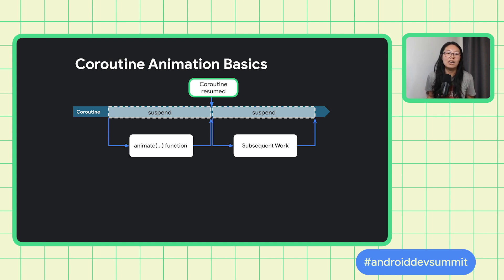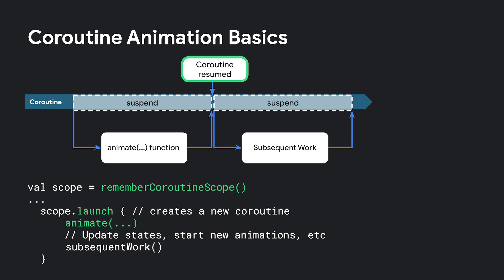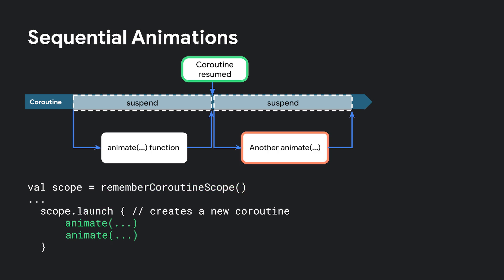To create a coroutine and sequence animations, we first create a coroutine scope inside composition using rememberCoroutineScope. Then we use the launch function to create a new coroutine in that scope. In the new coroutine, we invoke animate — animate only returns when the animation finishes, so any work after the animation, such as updating state or starting another animation, can be put below animate. If we need to cancel the animation, we simply cancel the coroutine. If we replace subsequent work with another animate function, we now have two animations running in sequence — in code, it is simply two animate functions called back-to-back to achieve sequential animations.